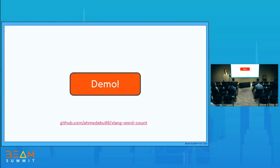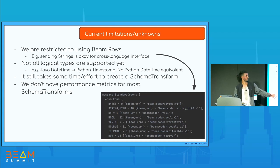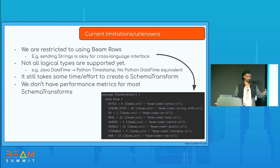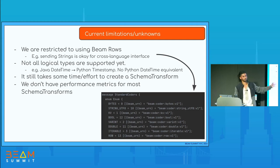The demo is also available on GitHub with a readme. What I showed was a very simple example, but we actually have a bunch of complex IOs already exposed with schema transforms. We have the BigQuery storage write API available in Python now — we don't have to write a whole new IO for the BigQuery IO in Python, we can just use the one available in Java.